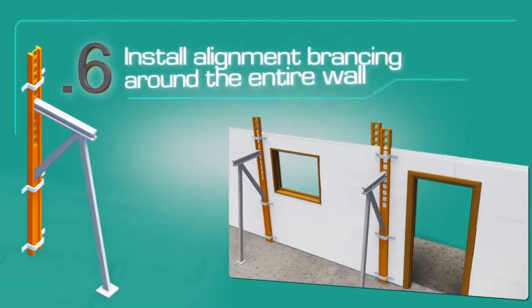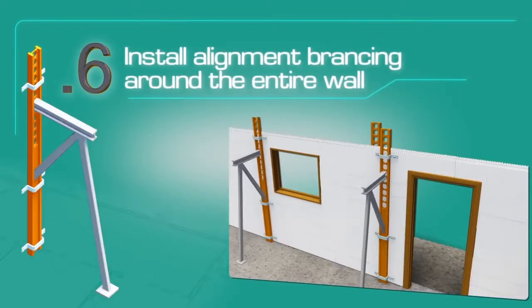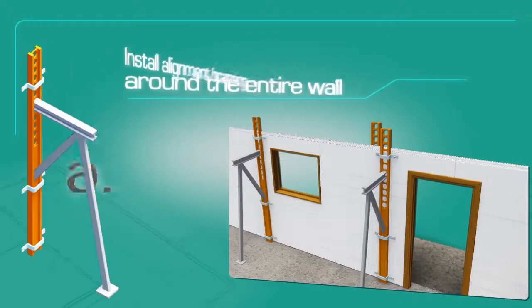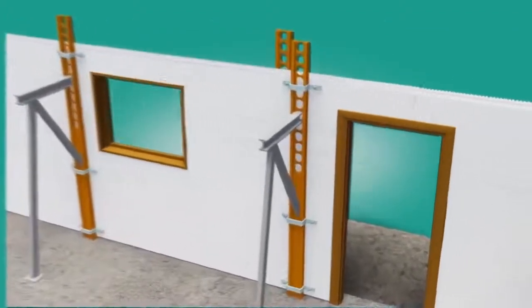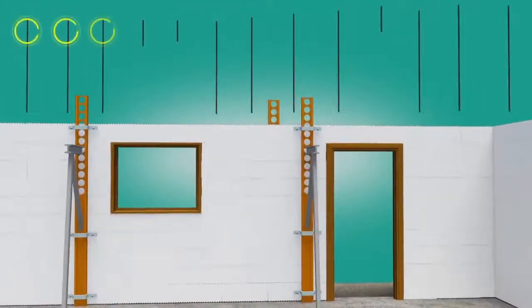Install alignment bracing around the entire wall of the structure to ensure that the walls are straight and plumb and to enable alignment adjustment before and during the pour to maintain the walls plumb.